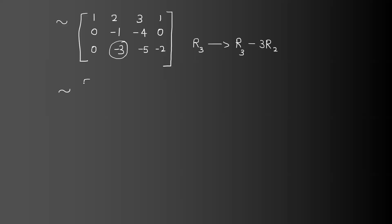The resulting matrix has rows: 1, 2, 3, 1 — then 0, minus 1, 4, 0 — then 0, 0, minus 3, plus 3, plus 3, minus 3, minus 3, minus 4, minus 2, giving 7 and minus 2.